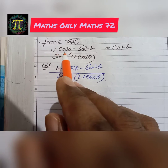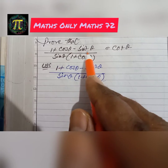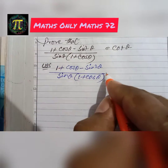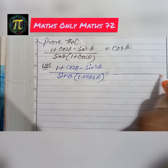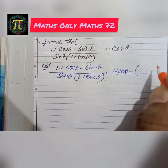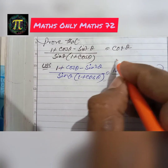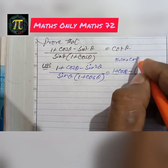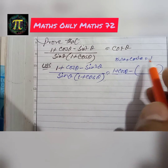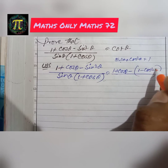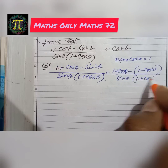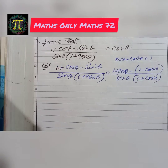Prove that (1 + cosθ − sin²θ) / (sinθ · (1 + cosθ)) = cotθ. Left hand side: 1 + cosθ − sin²θ. We know that sin²θ + cos²θ = 1, so sin²θ = 1 − cos²θ. Substituting: (1 + cosθ − (1 − cos²θ)) / (sinθ · (1 + cosθ)).